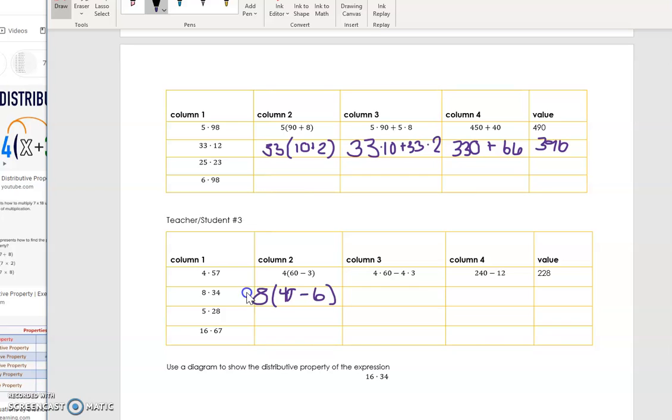So I am going to column three, which will have me show out the multiplication. So if I distribute the 8, it's 8 times 40 minus 8 times 6.